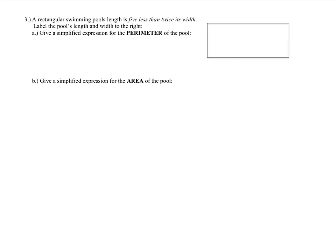For number 3, a rectangular swimming pool's length is 5 less than twice its width. We don't know the width, so call it w. The length is 2w minus 5. Label all four sides: two sides are 2w minus 5 and two sides are w.